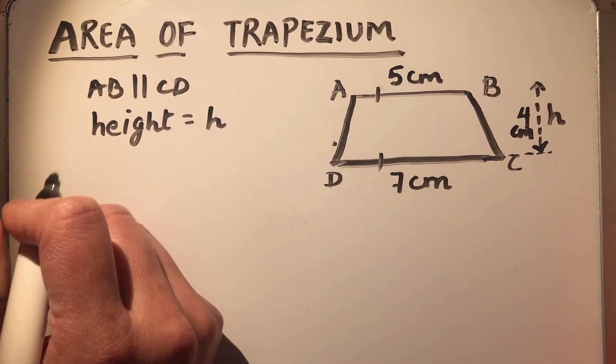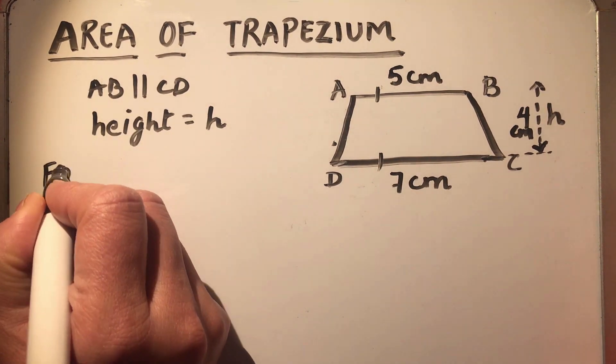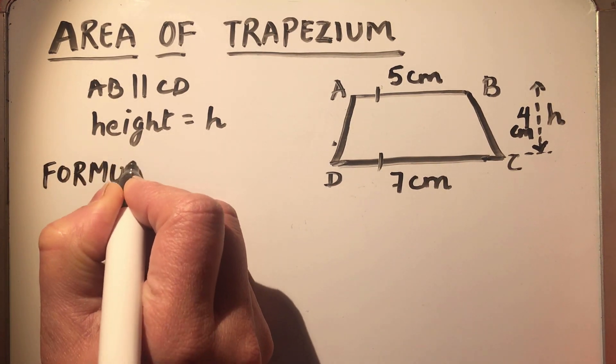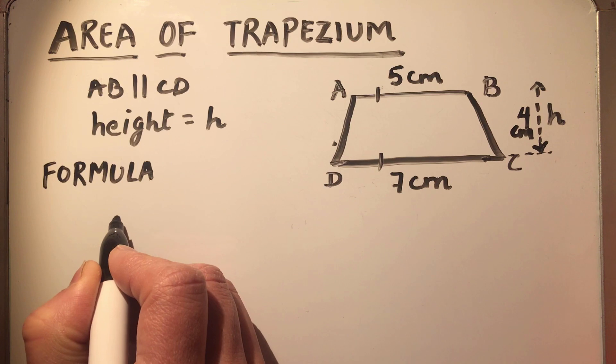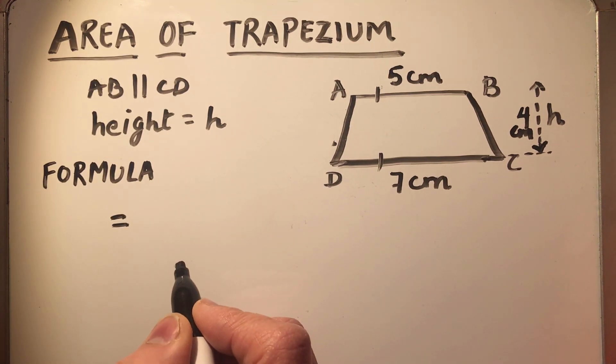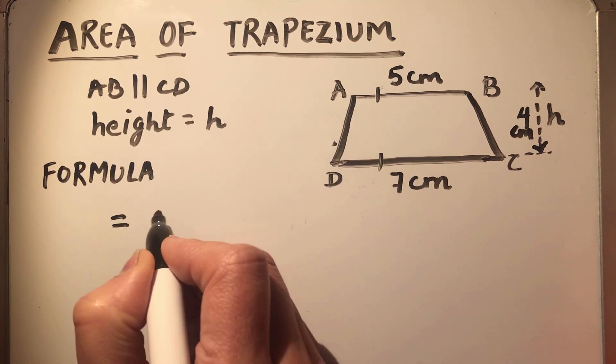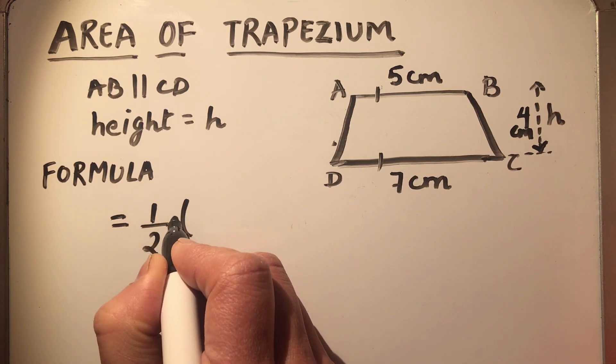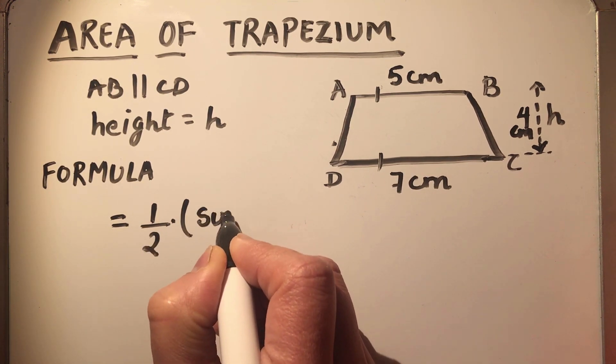The formula for finding the area of trapezium is half times sum of the parallel sides times h.